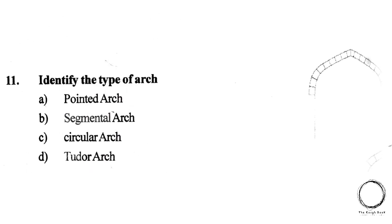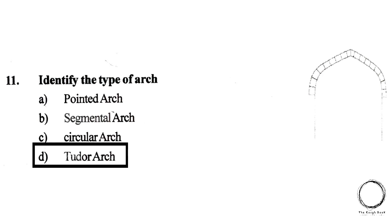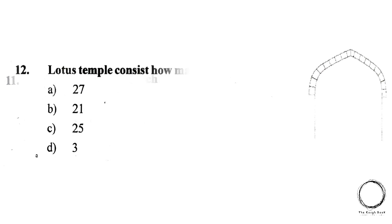Next, identify the type of arch. A. Pointed arch, B. Segmented arch, C. Circular arch, D. Tudor arch. The right answer is D, Tudor arch.